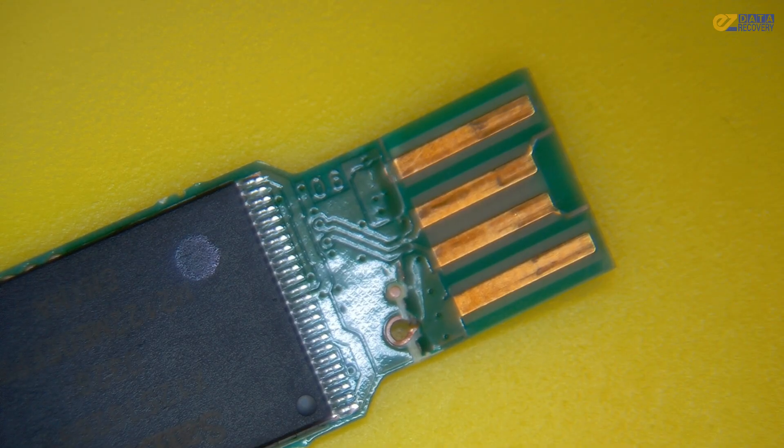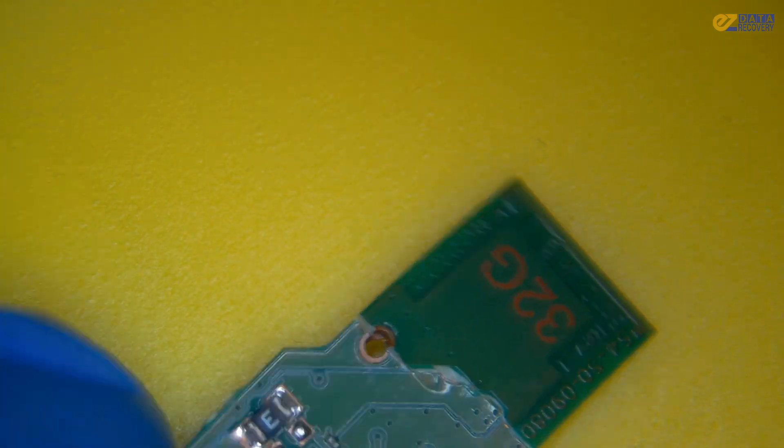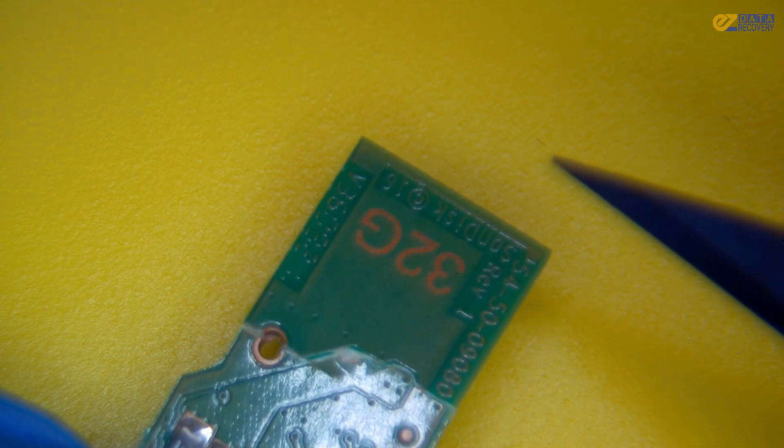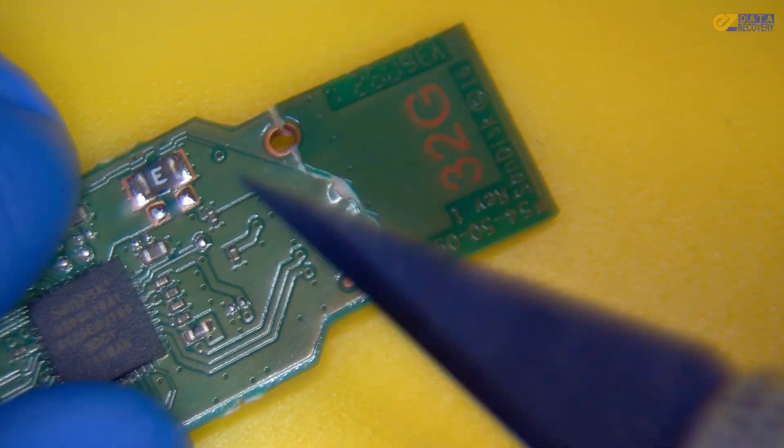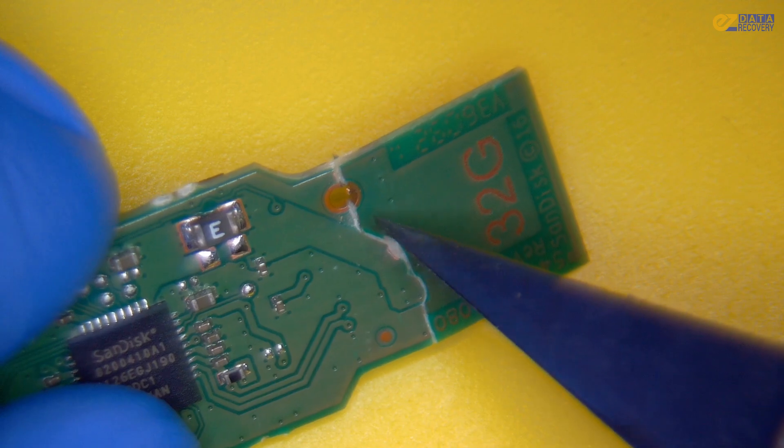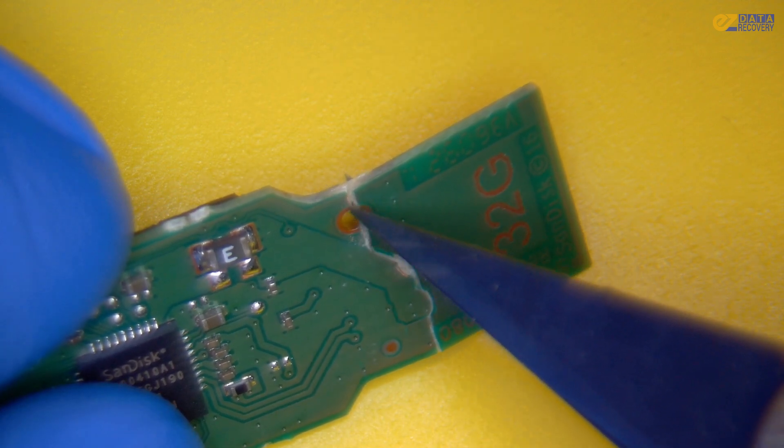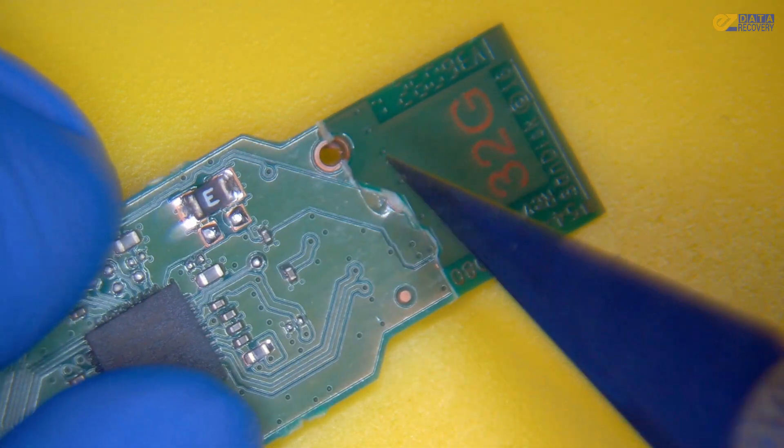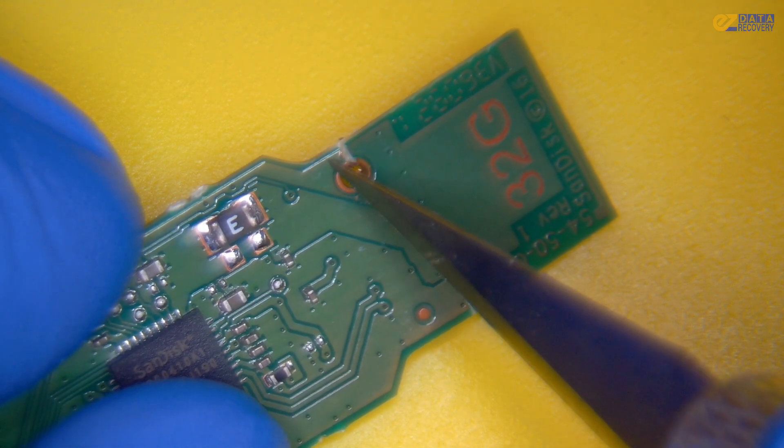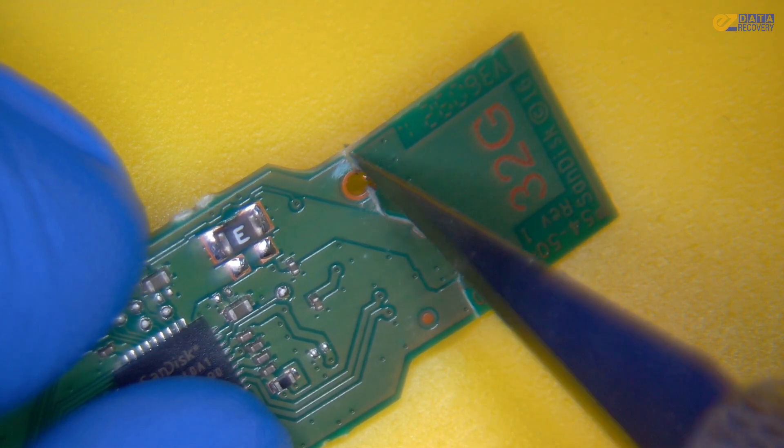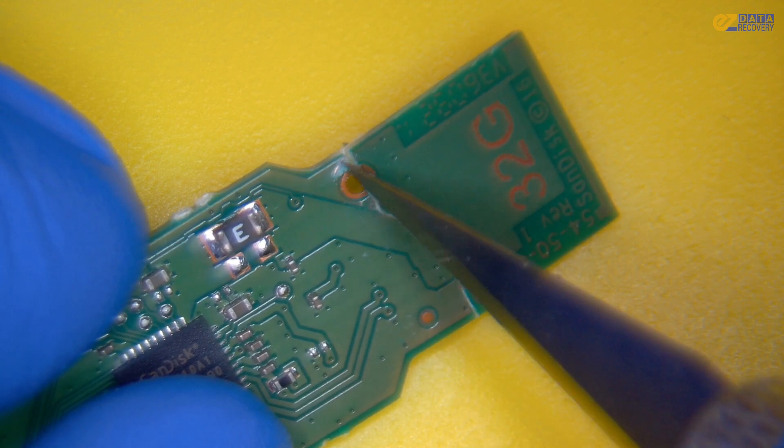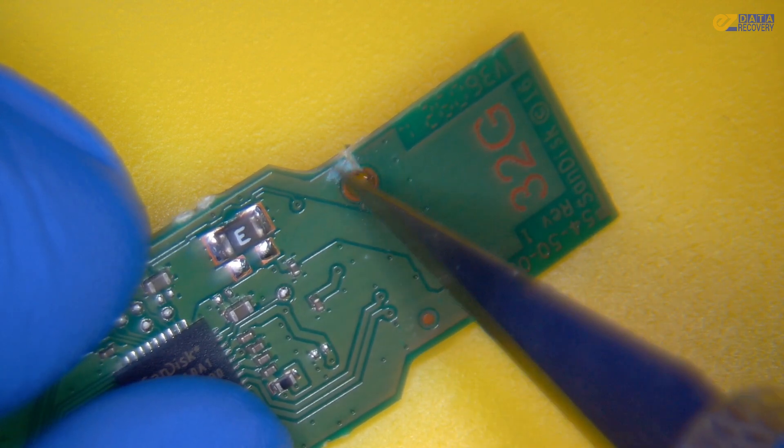We have our drive underneath the microscope here. We're going to get started on this data recovery process. And the first thing we're going to do is going to seem counterintuitive. We're going to go in with a scalpel and actually scrape away at the coating on this PCB. Why are we doing this? Well, this PCB has been snapped in half, right? So we need some way of joining these two halves. We need some way for these two halves to communicate with each other.